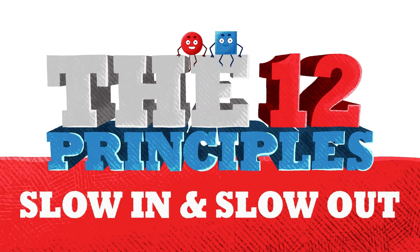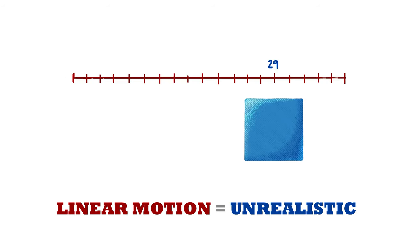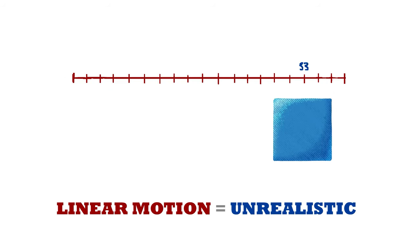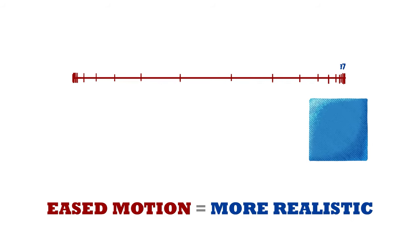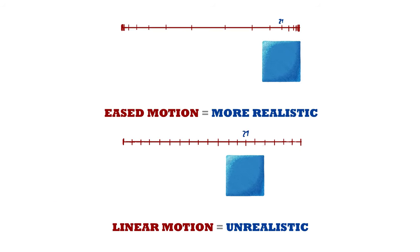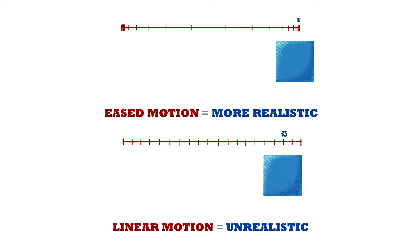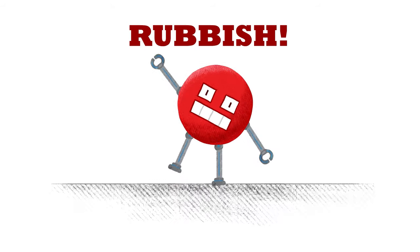Next up is slow in and slow out, or as it's more commonly referred to these days ease in and ease out. This is a super important principle that basically says most movement isn't linear. Most things start moving slowly, speed up and then slow down before stopping. If an object moves at one speed, starting and stopping without slow in and slow out, it looks unrealistic, mechanical and unnatural.